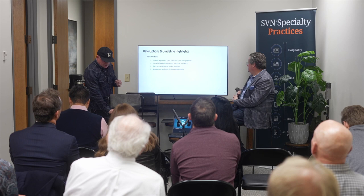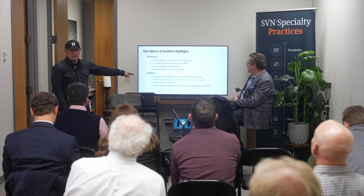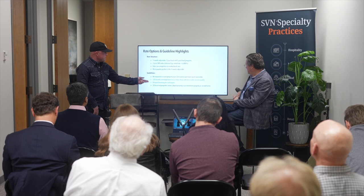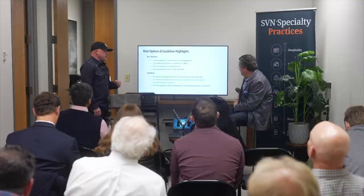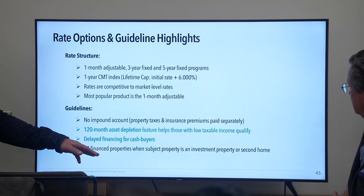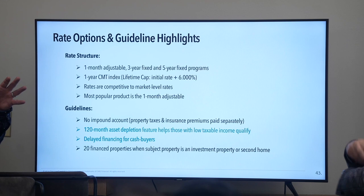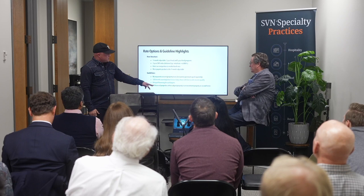Interest rates are variable as we talked about. There's no impound account — property tax and insurance are paid separately. There's no reason for you to send your money to Chase, Countrywide, or CMG and let them hold it for the whole year. You pay your own tax and insurance — no escrow account. On delayed financing, with regular financing you're capped at 10 financed properties; with the All-in-One you can have up to 20 properties.